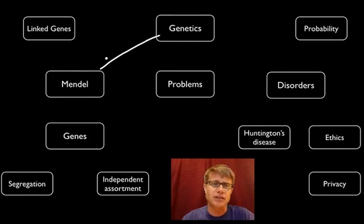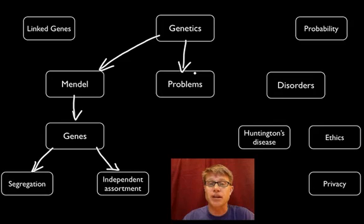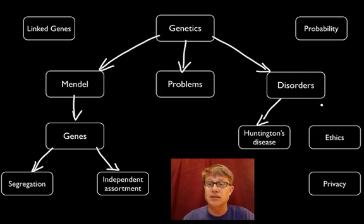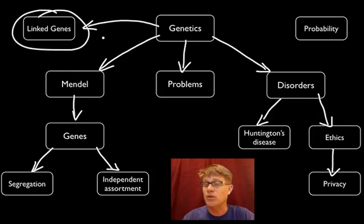In this video I'll talk about Mendelian or simple genetics. He identified the gene and came up with two laws: the law of segregation and independent assortment. We'll also have some practice problems and finish with genetic disorders — the example I'll talk about is Huntington's disease. With genetic testing it opens up the whole idea of ethics and privacy. What I won't be talking about: linked genes, genes on the same chromosome, sex chromosomes, or multigene traits — those get really complex and I'll cover them in the next podcast on advanced genetics.